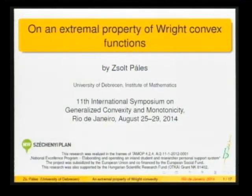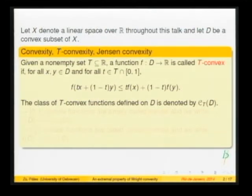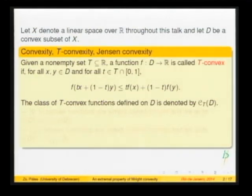Consider basically three cones of functions: convex functions, right-convex functions, and so-called Jensen convex functions. We are given a linear space over the reals and a convex subset D of this space. This will be the situation throughout the talk.